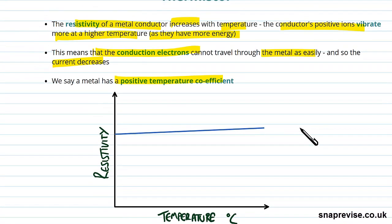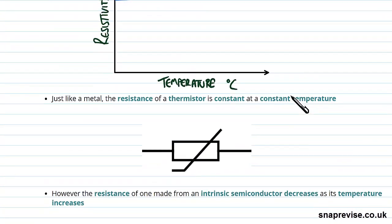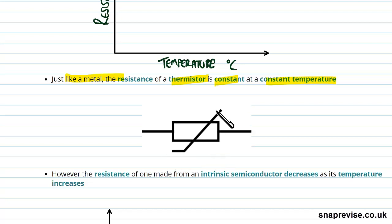So let's think about whether this has to be the case for metals. Clearly resistance increases as you heat up a metal, but are there components that aren't like that? The answer is yes. Just like a metal, the resistance of a thermistor is constant at a constant temperature. This is the symbol we use for a thermistor — we have this rectangle with a line through it like this. It's a distinctive drawing and you'll learn to recognize it easily. This is how we draw it: just a resistor but with this kind of line through it.